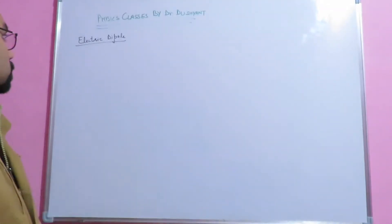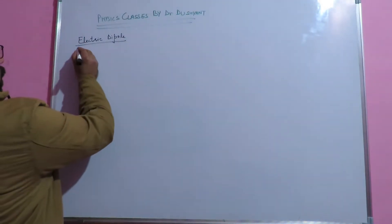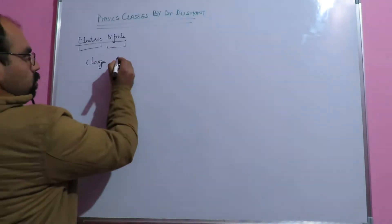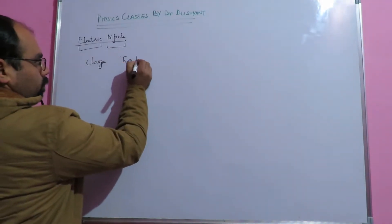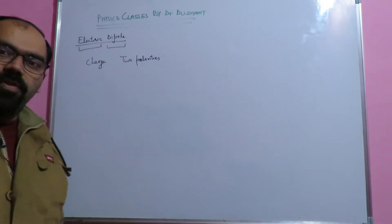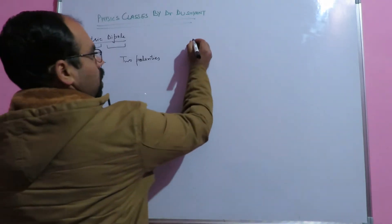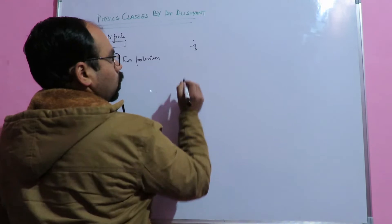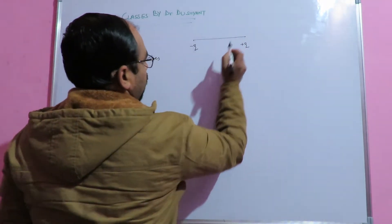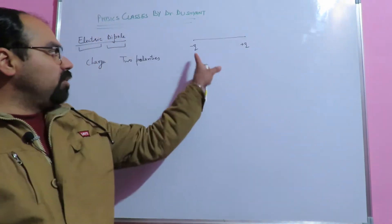Today's topic is electric dipole. We can see two things here: 'electric' and 'dipole'. Electric is related to charge, and dipole means two polarities. The definition of electric dipole: it is a pair of two charges having equal magnitude but opposite polarities, which are separated by a very small distance.